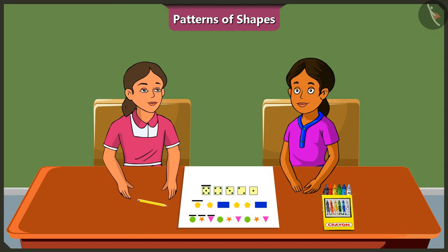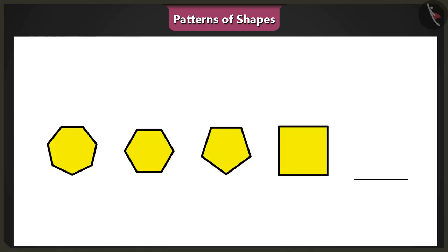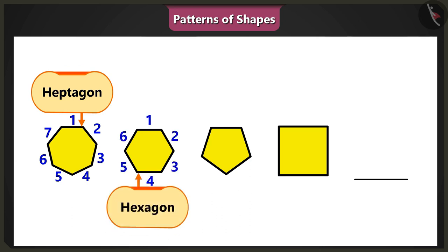But the pattern may not always be in ascending order. For example, look, here is a pattern of shapes. In this pattern, a seven-sided shape, heptagon, is followed by a six-sided shape, hexagon.